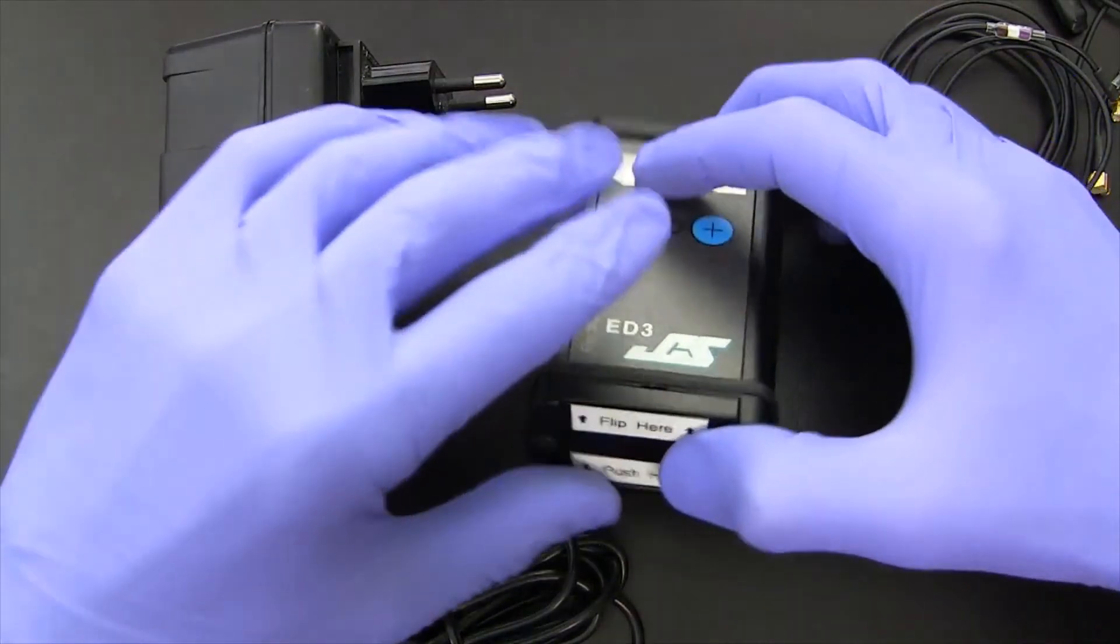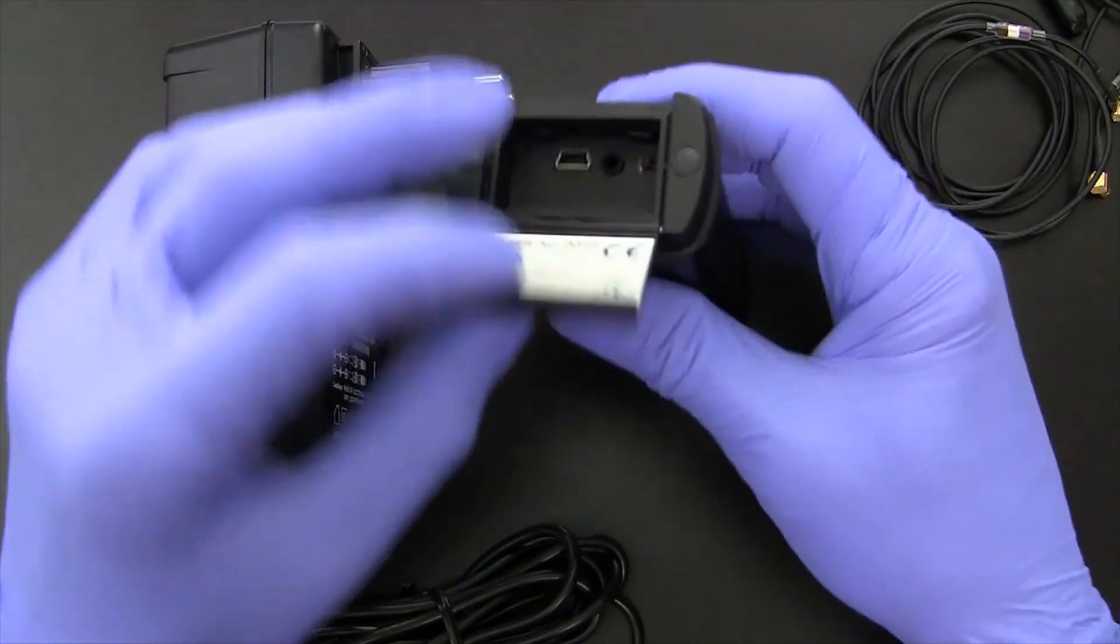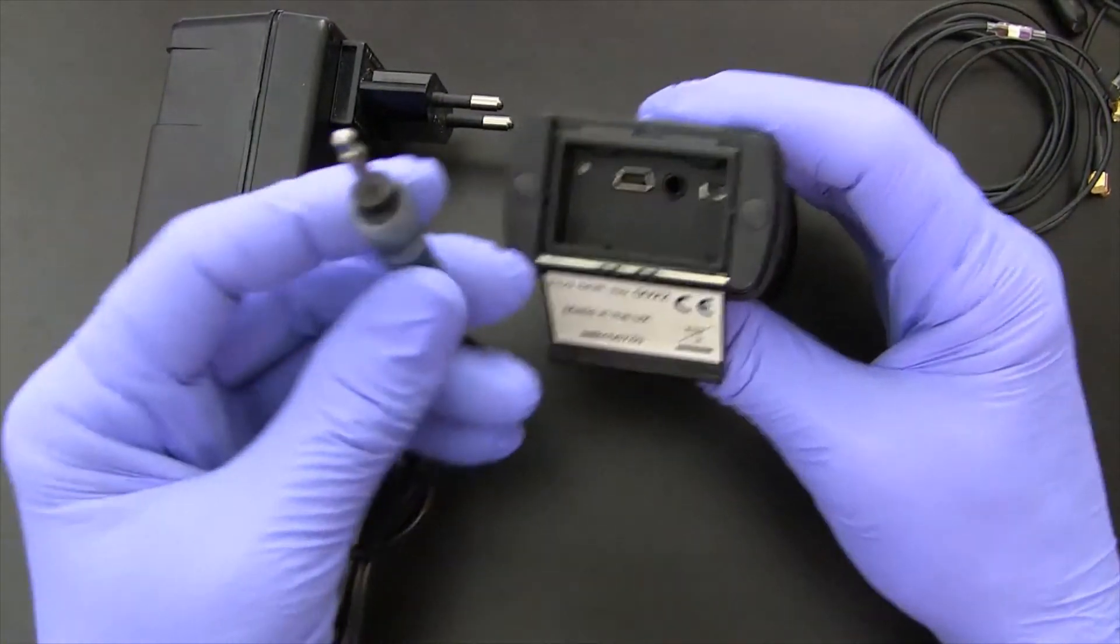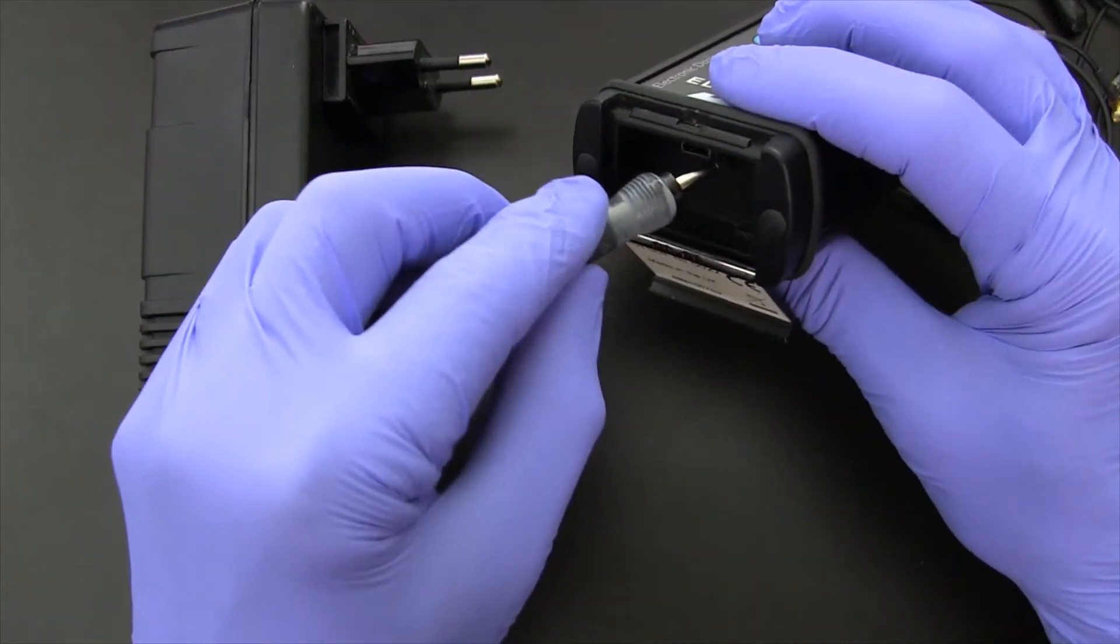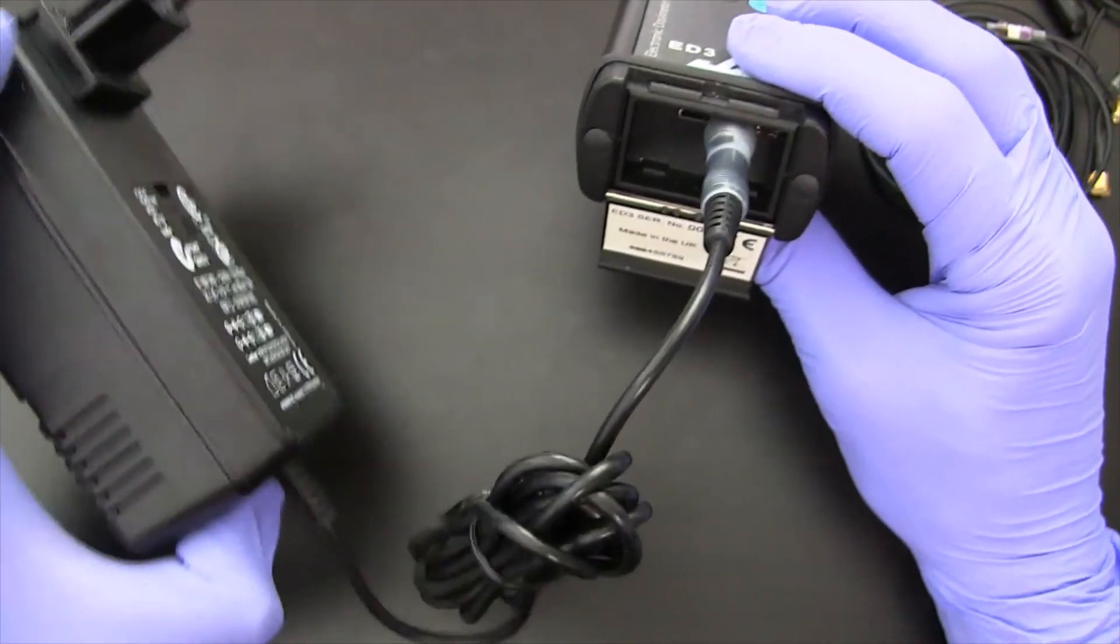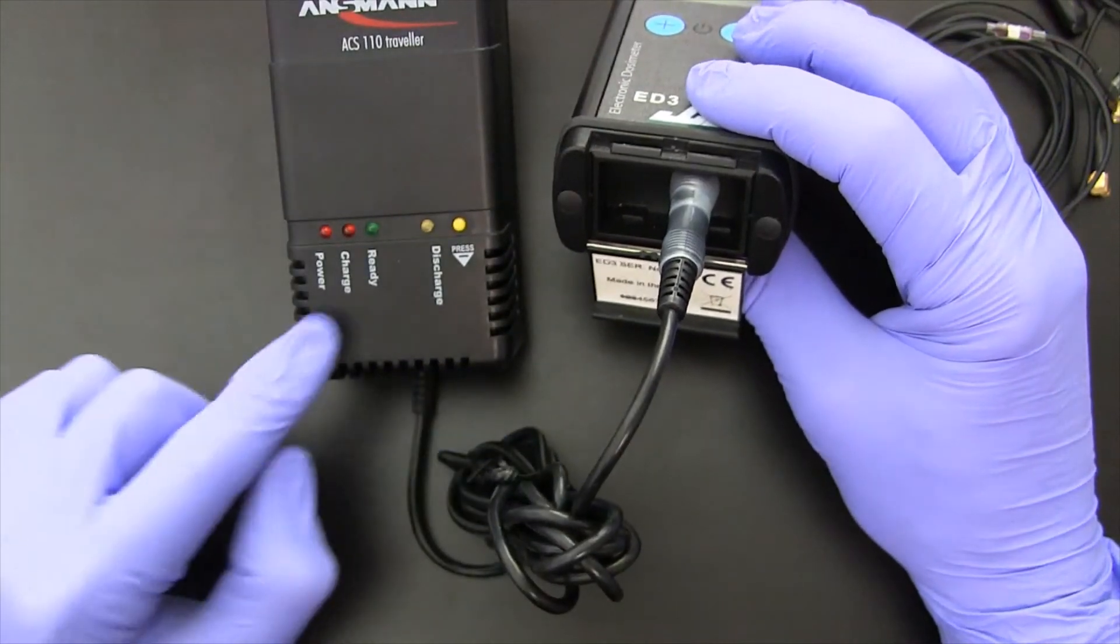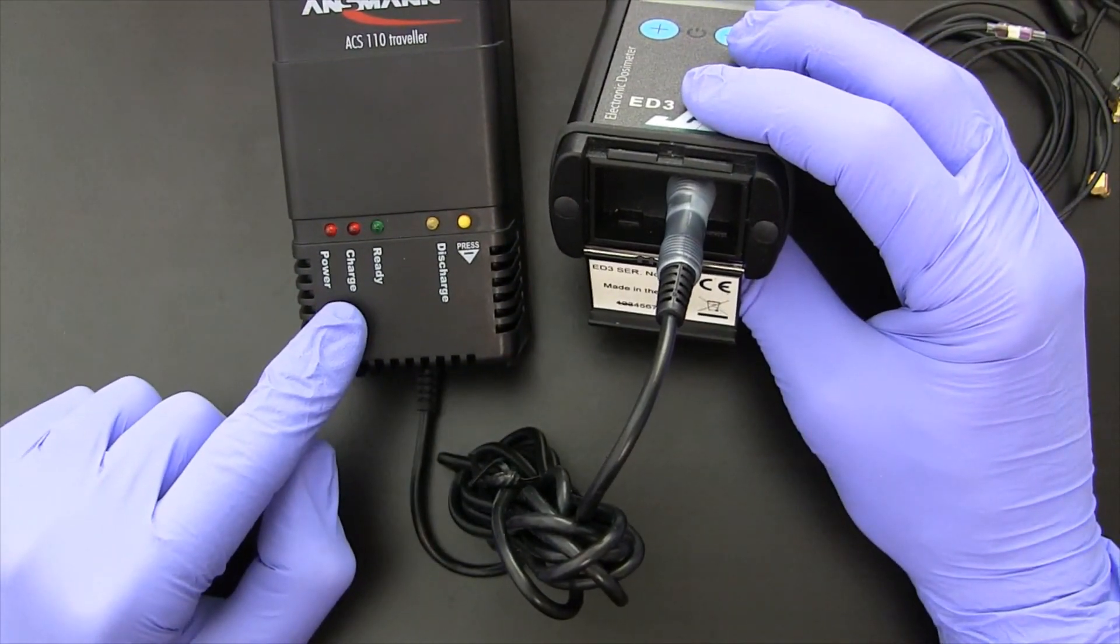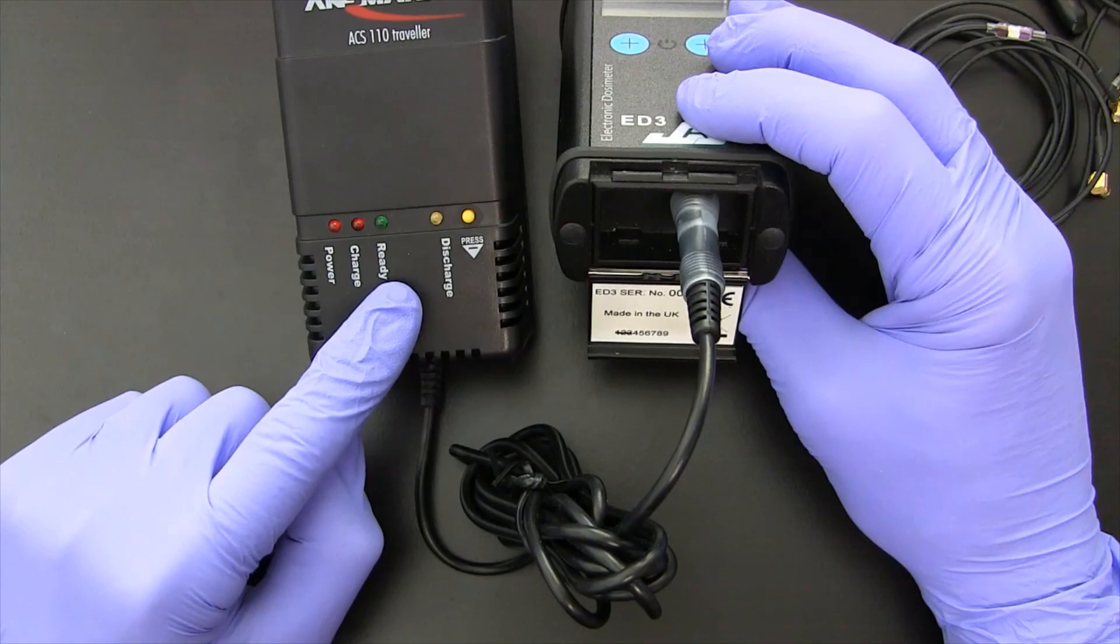When it's time to charge the unit, all you do is open up the back, select the charging adapter, plug it into the charging port, and then plugging it into the wall. The lights will indicate what's happening, so effectively when the unit is fully charged, the green light will come on and say ready.